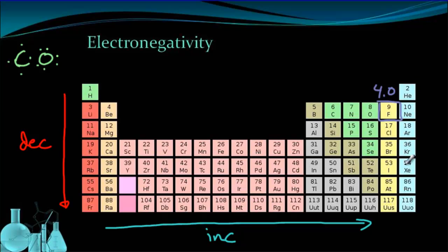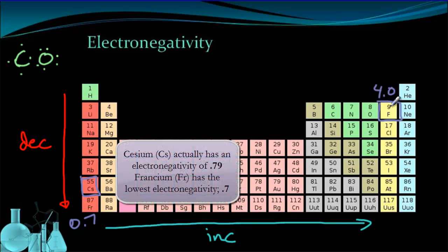Now the noble gases don't have an electronegativity because they don't pull on another atom's electrons at all. They don't want any more electrons. If you follow the trend, it should make sense that cesium down here has a very low electronegativity, 0.7, as compared to fluorine's 4.0, which is the highest possible electronegativity.